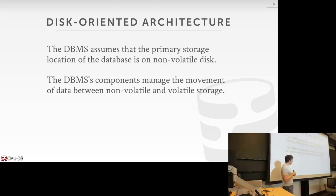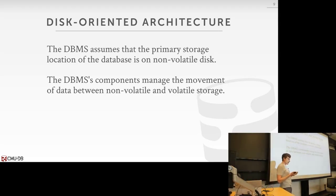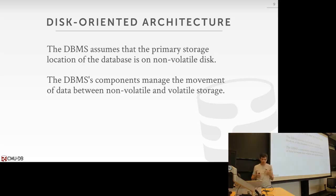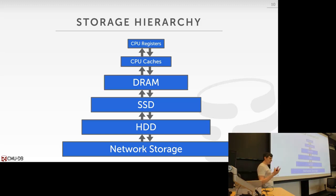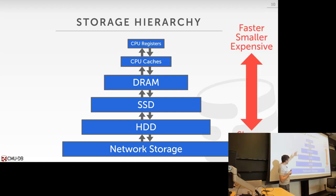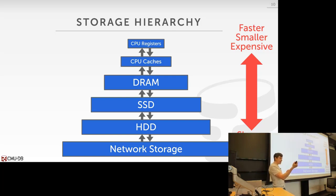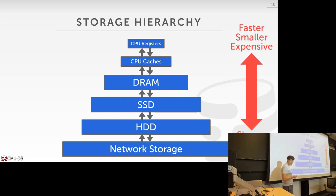We want to make the distinction between volatile and non-volatile storage. The storage hierarchy starts at the top with things that are very fast, very expensive, and very small — CPU registers and caches like L1, L2, L3. Then we have DRAM, and below that SSDs, spinning disk hard drives, and network storage. At the bottom, they're very large but much slower and cheaper.